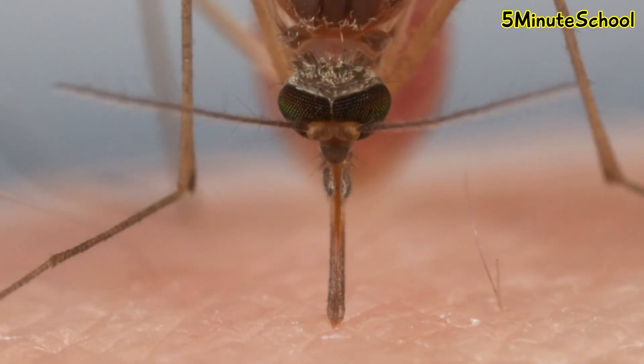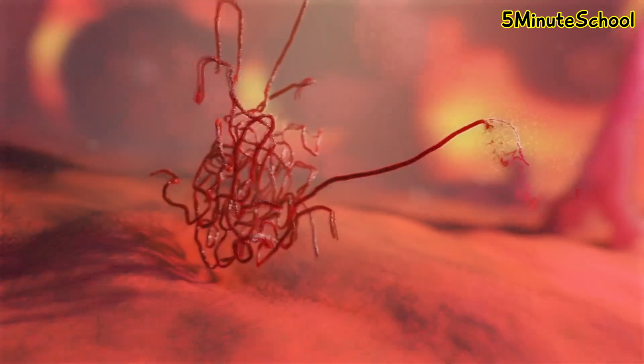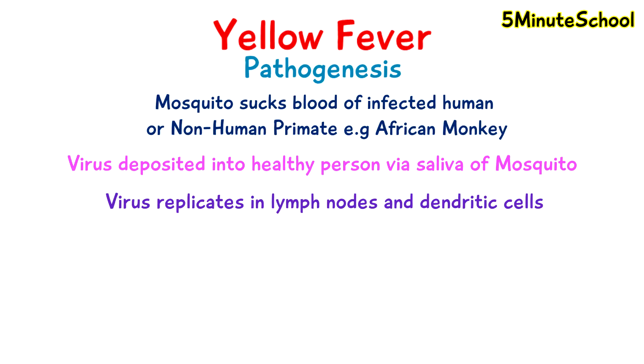The virus then starts replicating, and one area where it replicates the most is in the lymph nodes. It particularly targets dendritic cells of the lymph nodes.